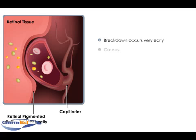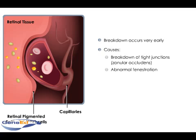One notable cause of this breakdown is the loss of tight junctions, or zonular occludens, between adjacent retinal vascular endothelial cells. It is also possible that capillary endothelial cells become abnormally fenestrated, or perforated, as diabetic retinopathy progresses, further compromising the blood retinal barrier.